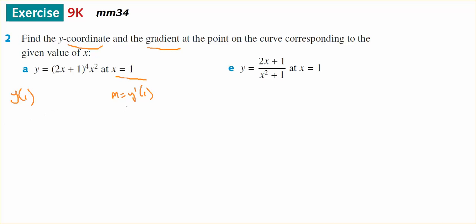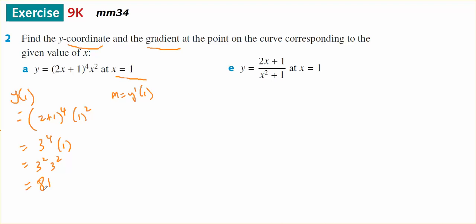So y of 1 should equal 2 times 1 plus 1 to the power of 4, times 1 squared. That gives 3 to the power of 4 times 1, which is 3 squared times 3 squared, or 9 times 9. So 81 is the y-value when x equals 1.